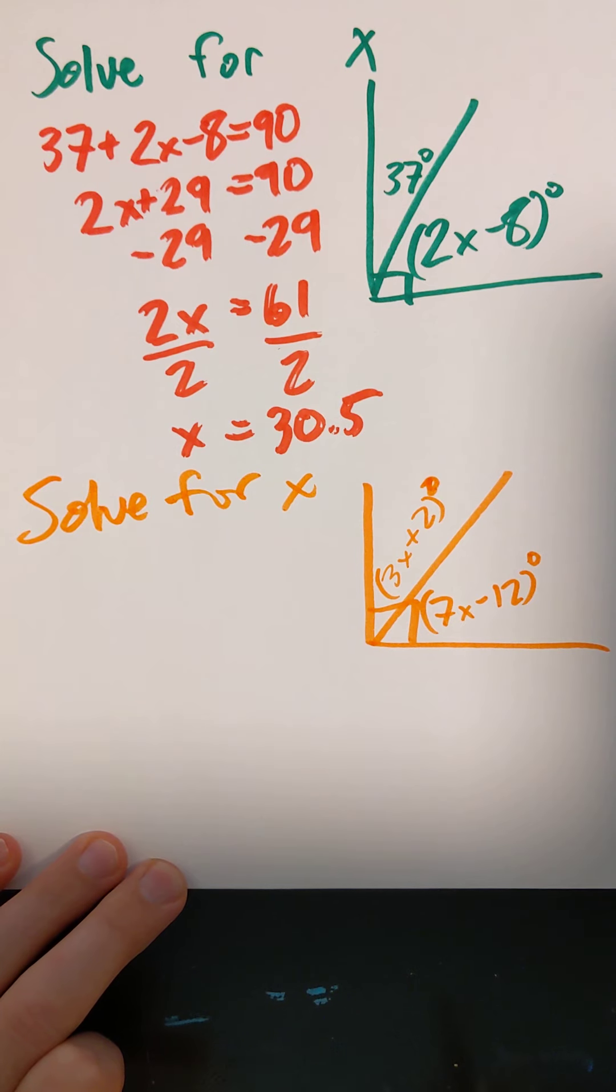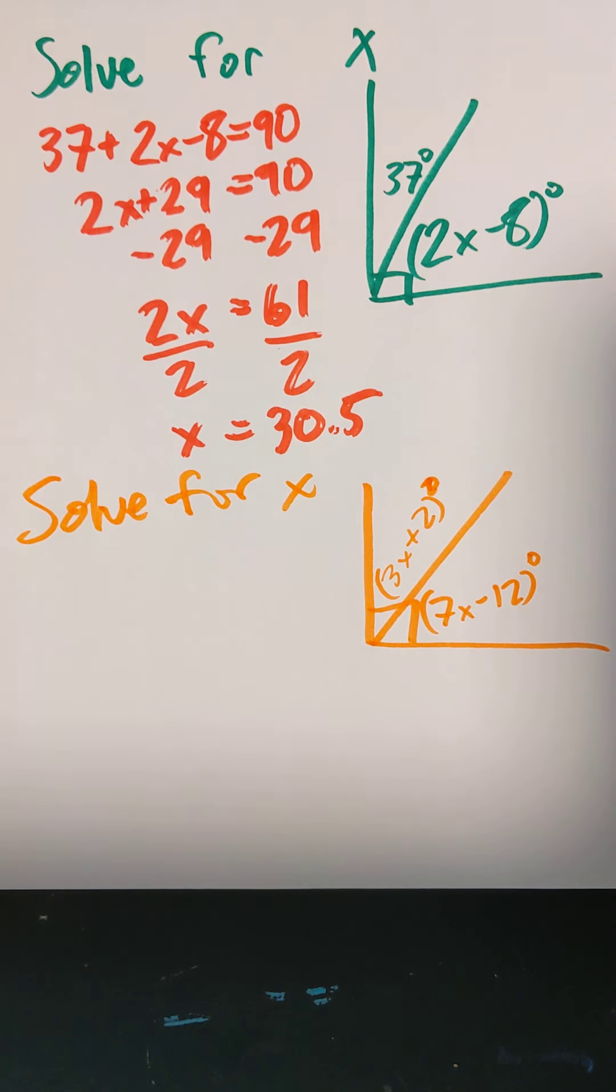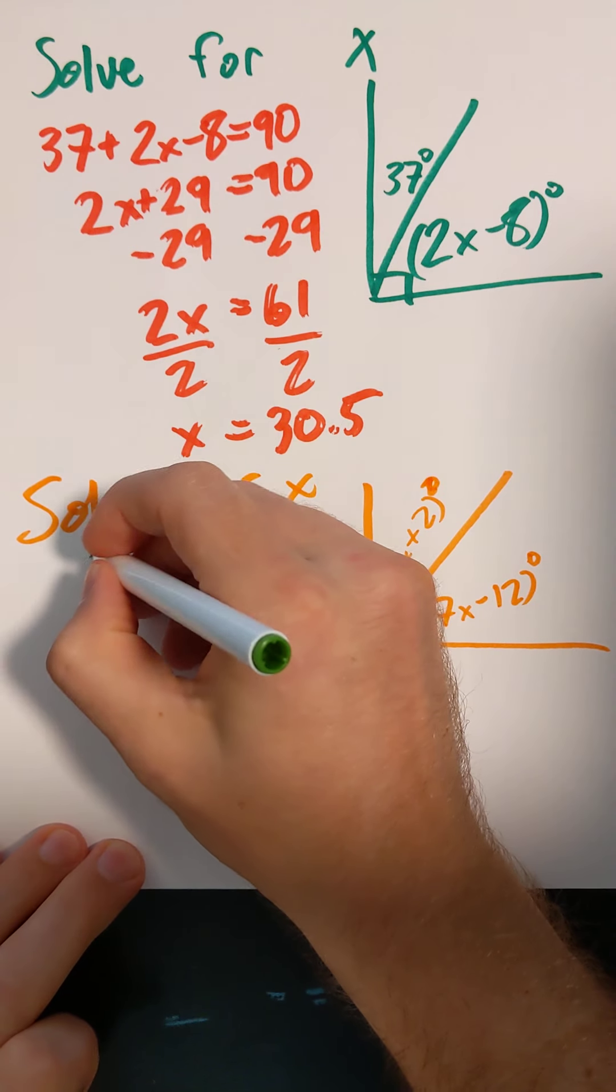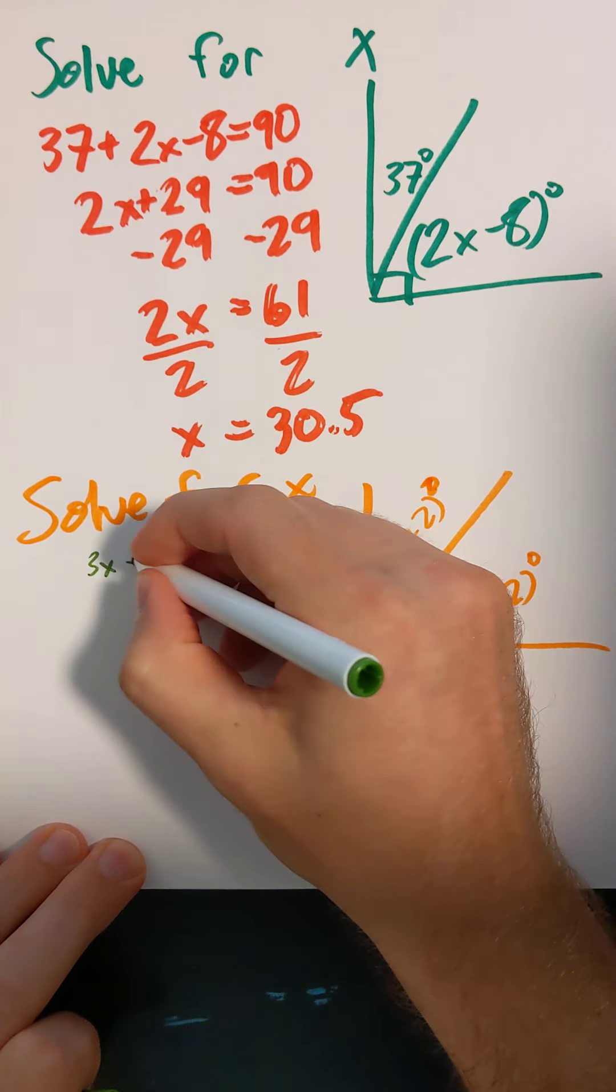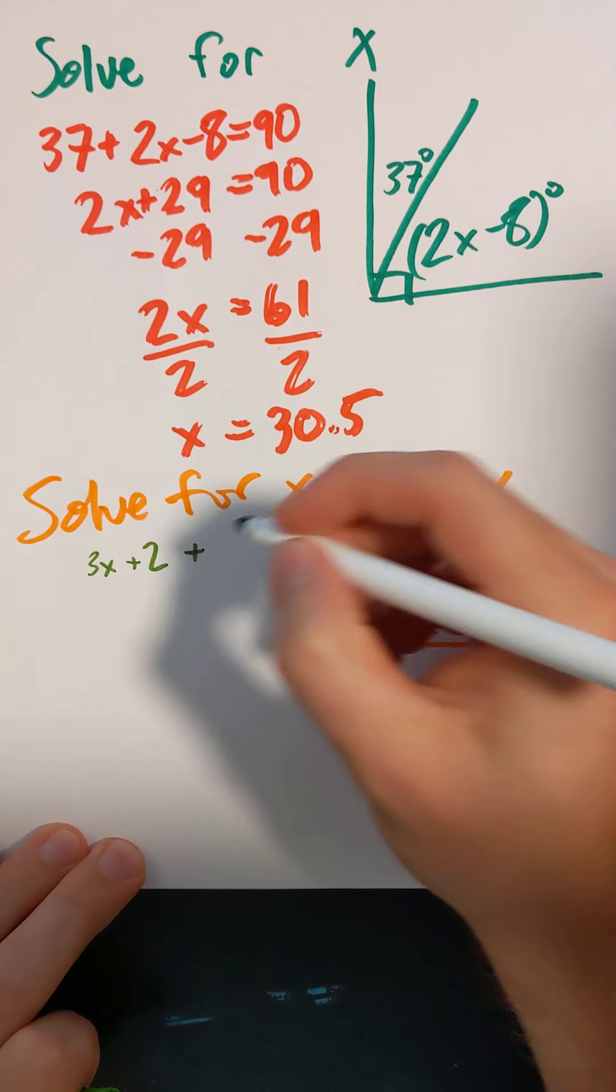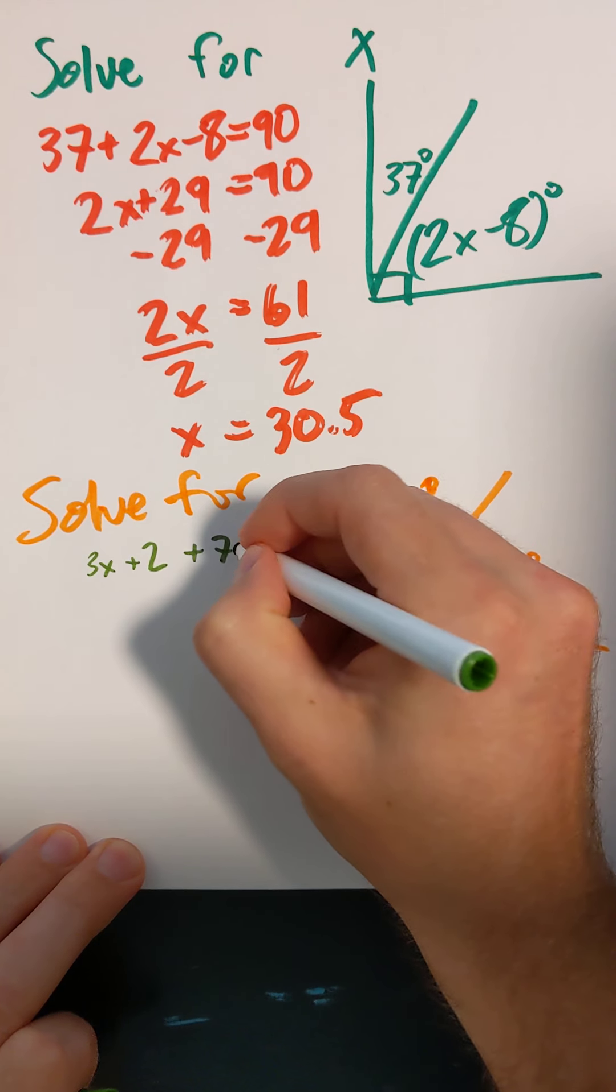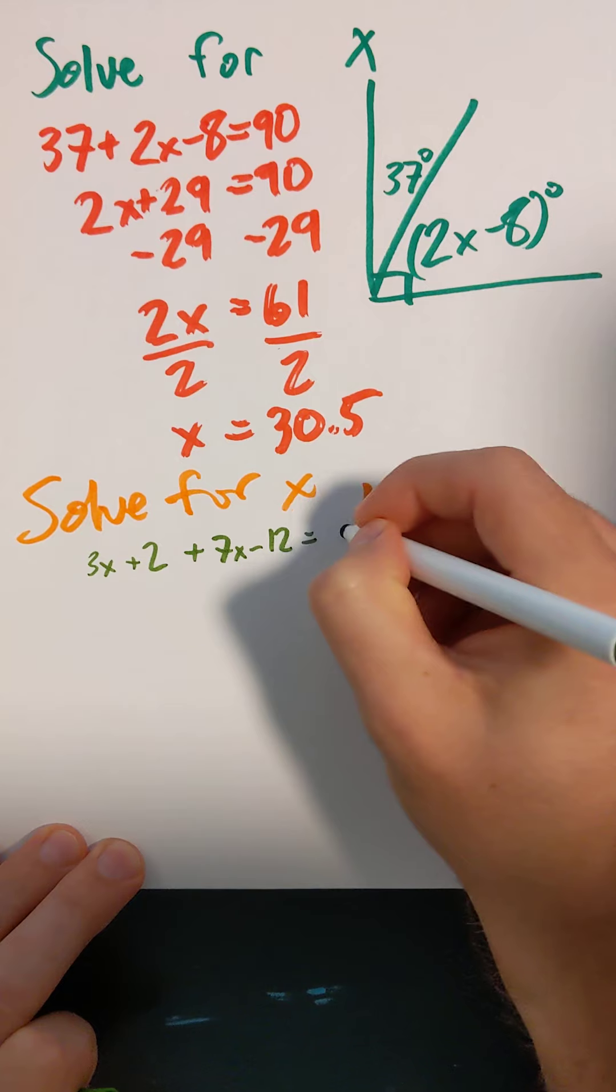Well, what I would need to do from here is think, do they add up to 90? Yes, they do. So I'm going to add them up and set them equal to 90. 3X plus 2 plus 7X minus 12, and that's equal to 90.